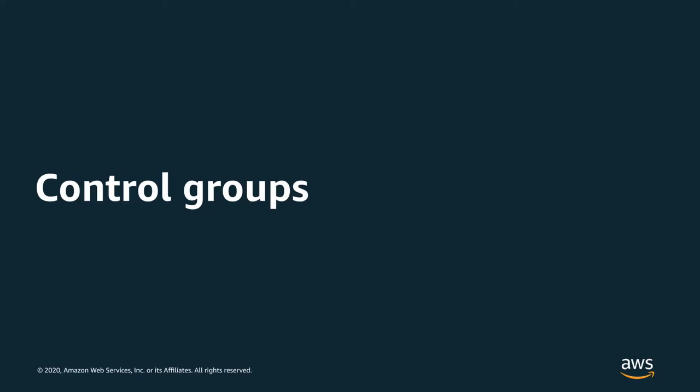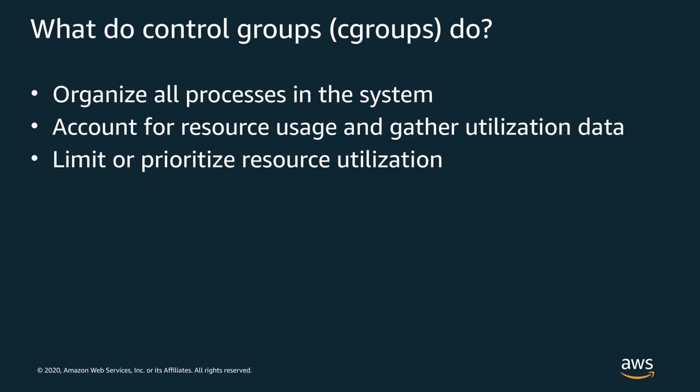The first primitive I want to talk about today is control groups, or cgroups. Control groups are a Linux system for tracking, grouping, and organizing the processes that run. Every process is tracked with cgroups, regardless of whether it's in a container or not. Cgroups are typically used to associate processes with resources — you can track how much a group of processes are using for a given kind of resource.